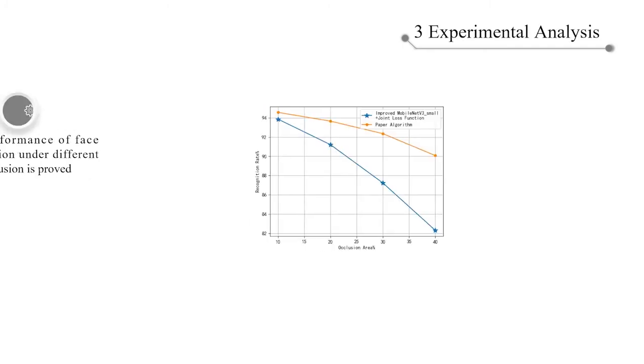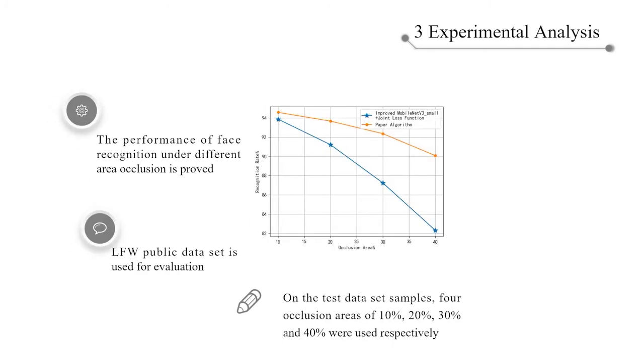This is mainly to prove the performance of face recognition under occlusion of different area sizes. The experiment uses RFW public datasets for evaluation. On the test dataset, area sizes of occlusion of 10%, 20%, 30%, and 40% are used respectively.